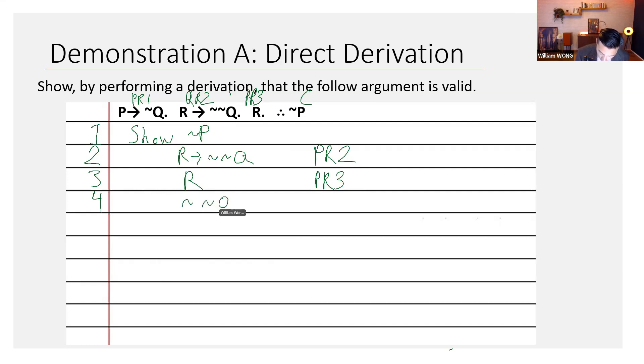And it would give you not, not Q. And now you want to justify it. You say two, three, MP.